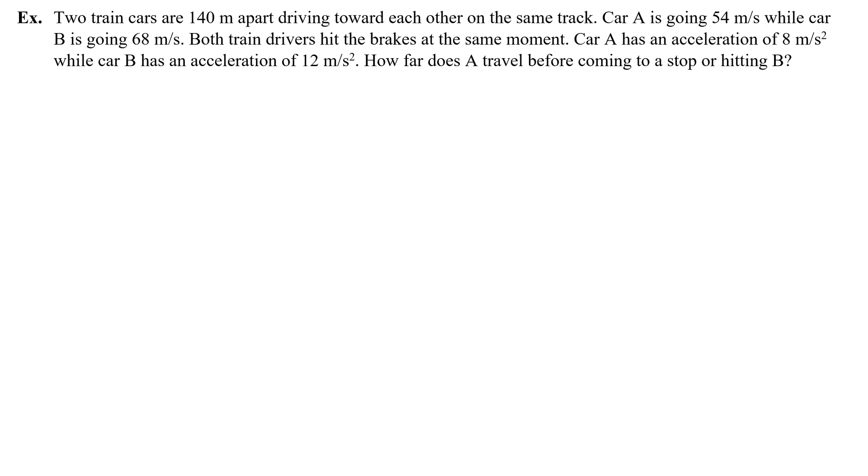Two train cars are 140 meters apart driving toward each other on the same track. Car A is going 54 meters a second, while car B is going 68. Both trains hit the brakes at the same moment. Car A has an acceleration of 8 meters per second squared, while car B has an acceleration of 12 meters per second squared. How far does A travel before coming to a stop or hitting B?